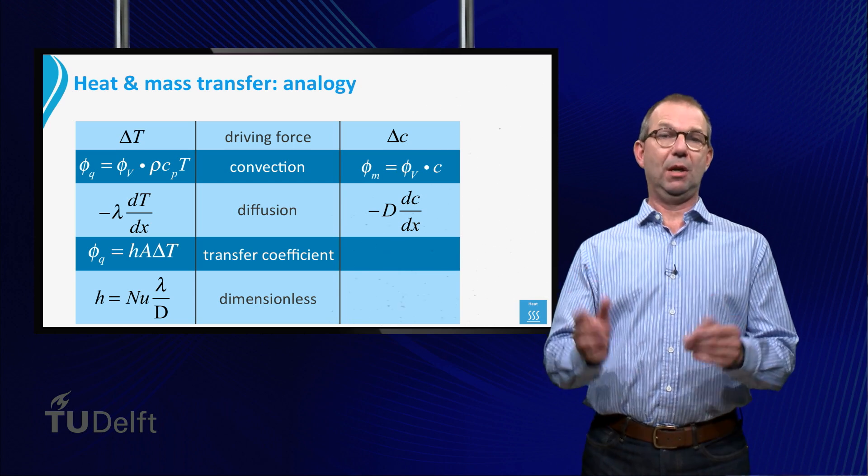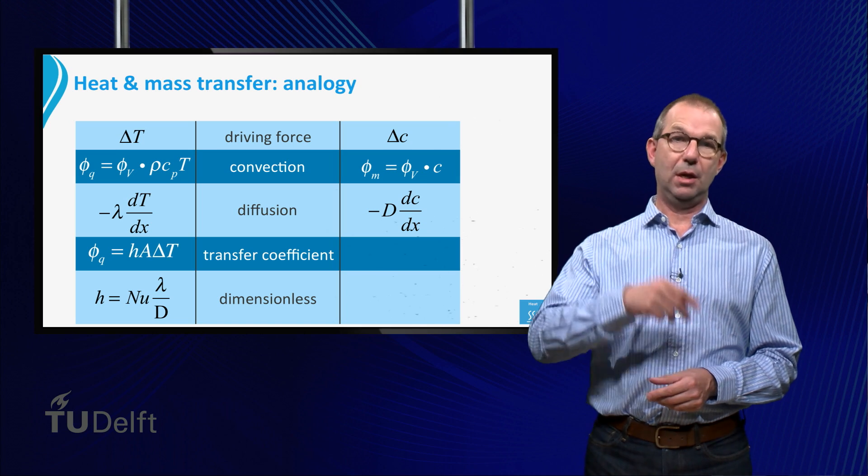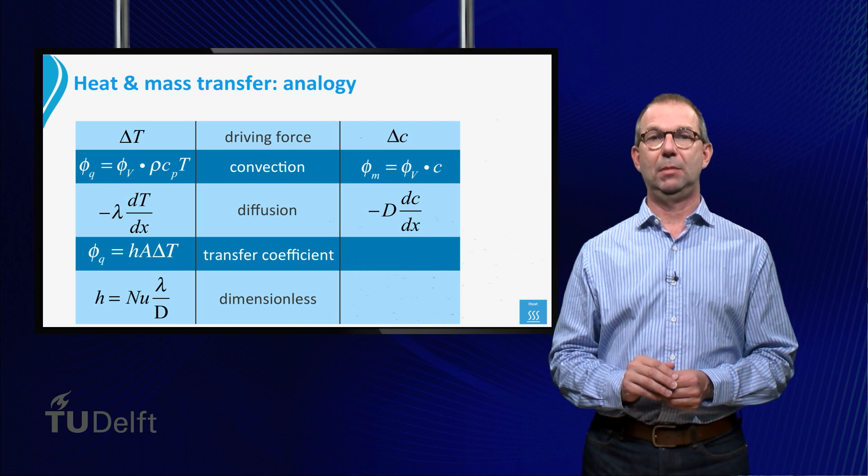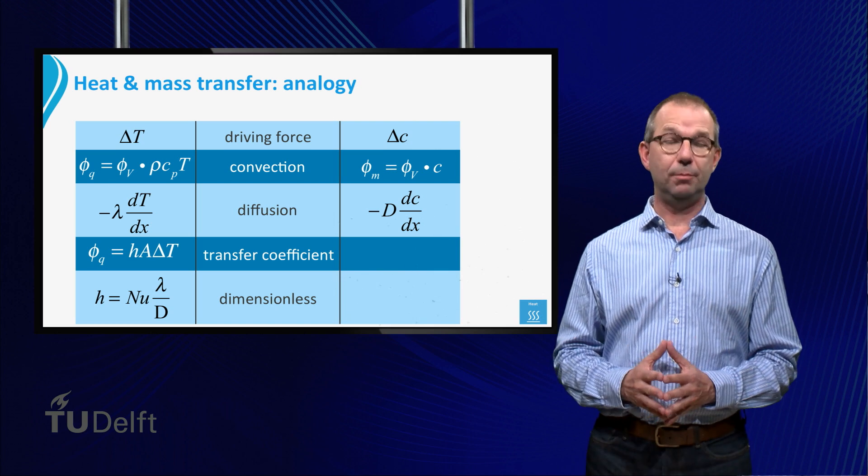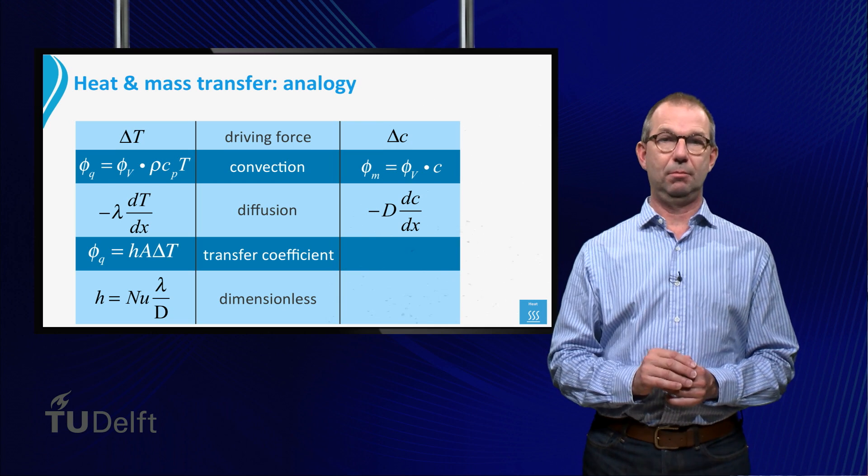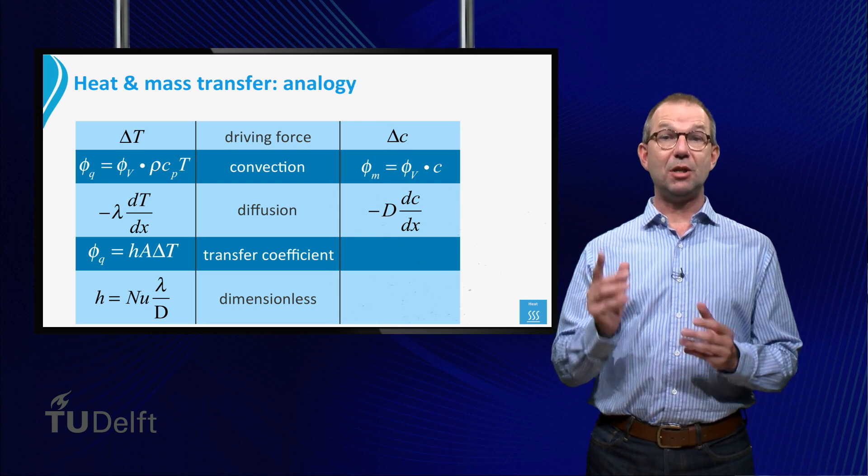In the case of heat, the concentration is rho cp times temperature, representing the internal energy. In the case of mass transfer, it is the concentration of the species itself. Mathematically these expressions are the same.